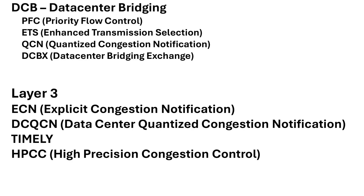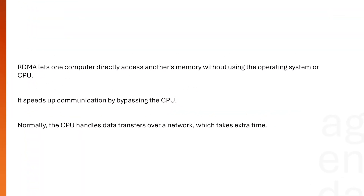We will understand the differences between these protocols and their traditional equivalents. In this module, let's start with RDMA first. RDMA is Remote Direct Memory Access. This technology allows one computer to access the memory of another computer directly, without CPU involvement — that is the critical part. It bypasses both the operating system and the CPU of either machine, which gives us much faster communication.